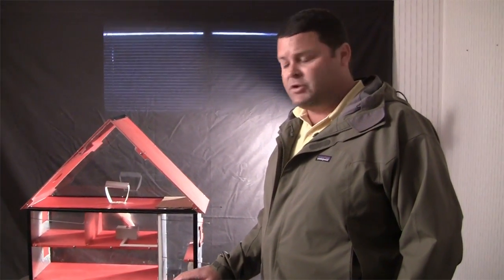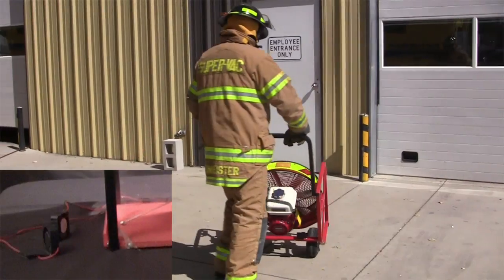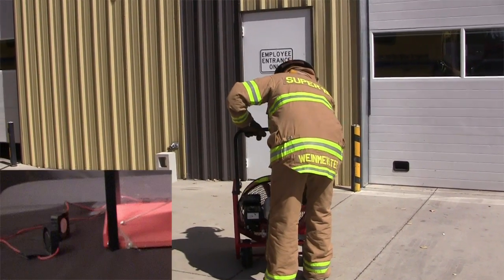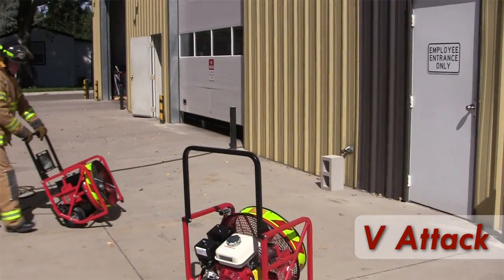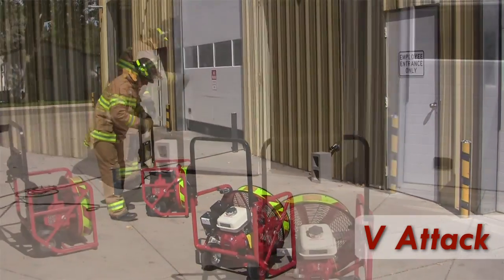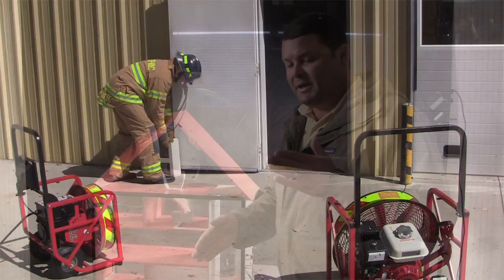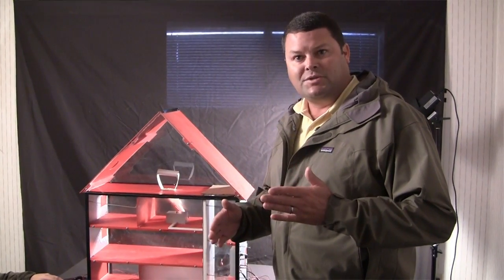What we're going to do first is use two 18-inch gas fans in a V-Attack configuration. In this configuration, we're putting two fans on each side of the door, one up top and one aiming down towards the bottom, so you're getting a total seal on the doorway.